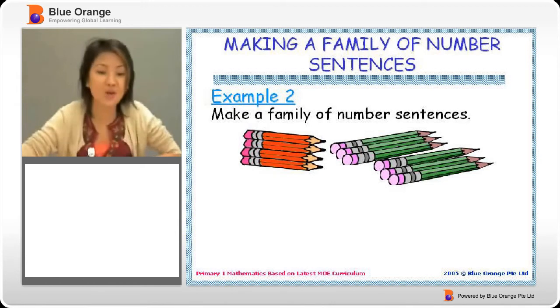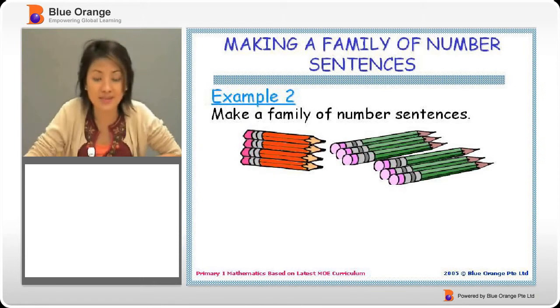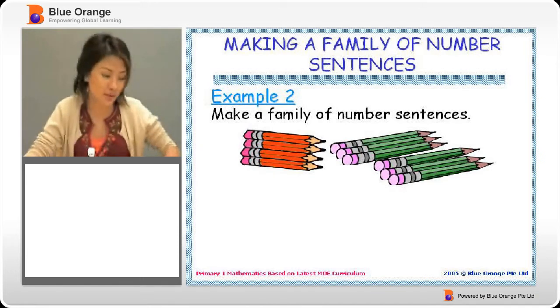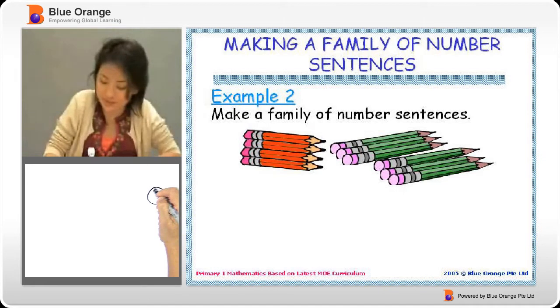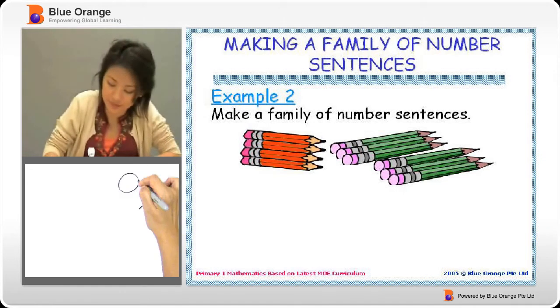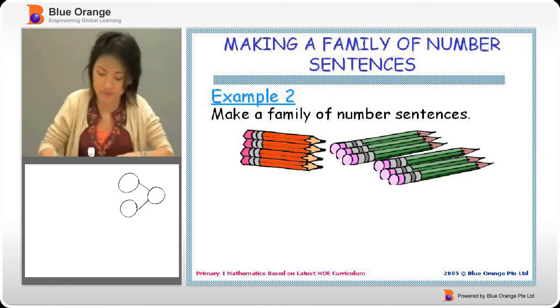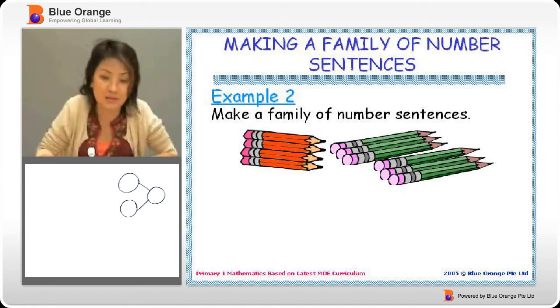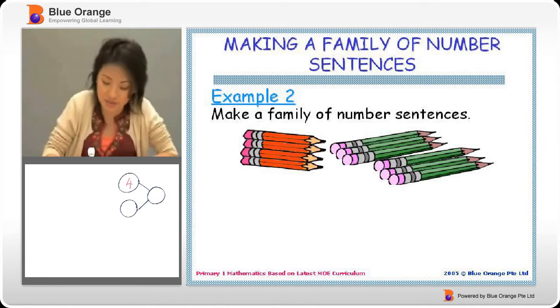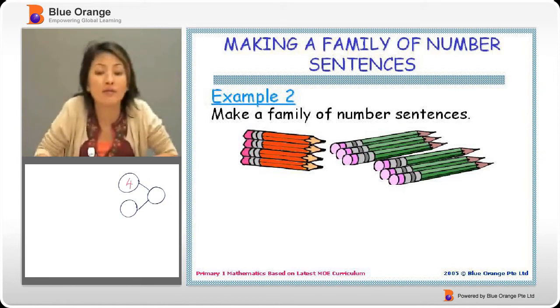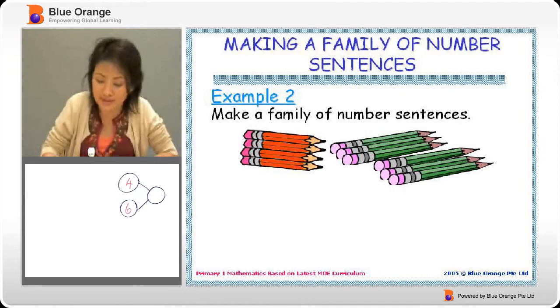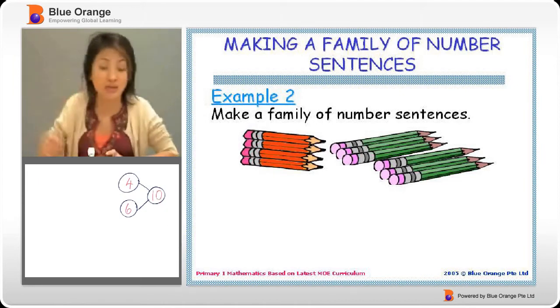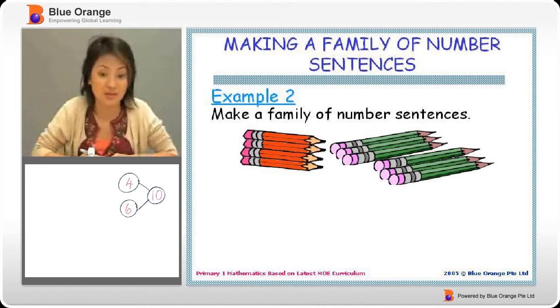Are you ready for another example? This time now, we have four red pencils, and then we have six green pencils. So let's put in our number bonds. The parts. Four red, so I'll write four. Six green, I'll write six here. Total will be ten. If you count, there are ten.